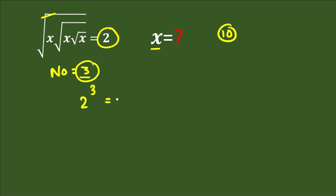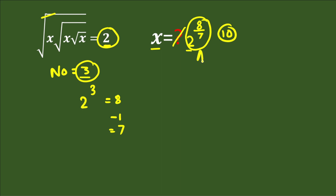Since 2 to the power of 3 is 8, for calculating x: the base is 2 on the right-hand side, the power is 8 in the numerator, and we subtract 1 to get 7. So 2 to the power of 8 divided by 7 — that is, 2^(8/7) — is our answer. That's how quickly we can calculate the value of x.